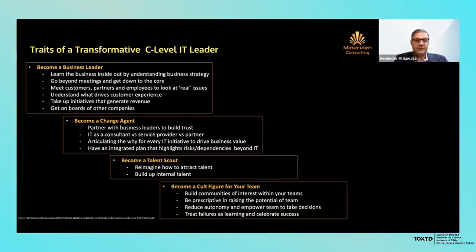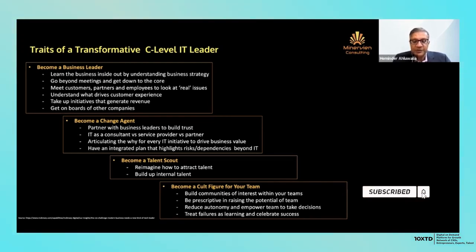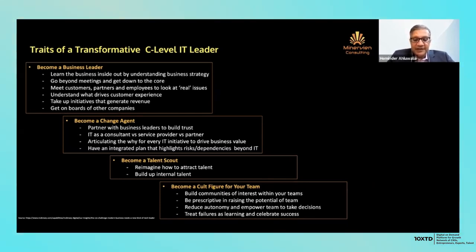Understanding the strengths and weaknesses of team members and how to raise the bar is key. Build a high-performance team by reducing micromanagement and empowering them to take decisions — equipping them with enough tools, knowledge, and information to make their own decisions. Treat failures as learning and celebrate success. These are some of the big ticket traits of a transformative C-level IT leader.